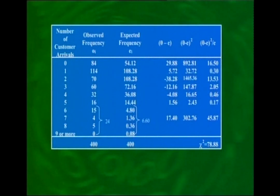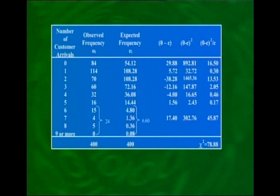Now that we have the expected frequencies, we apply the chi-square test of goodness of fit. Given the column of observed frequencies O_i and expected frequencies E_i, we construct the column of (O_i − E_i)² / E_i. Adding this last column, chi-square comes out to be 78.88.